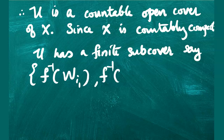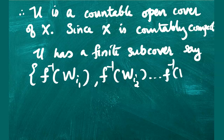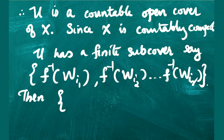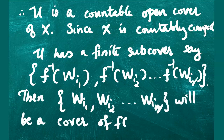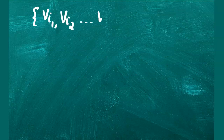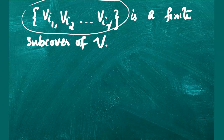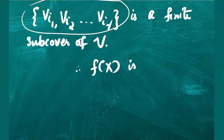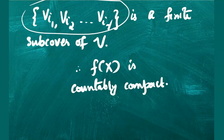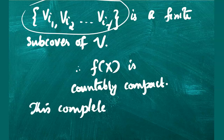Since X is countably compact, this cover has a finite sub-cover: f⁻¹(Wi1), f⁻¹(Wi2), ..., f⁻¹(Wir). Then the corresponding sub-collection {Wi1, Wi2, ..., Wir} is a cover of f(X), from which we obtain {Vi1, Vi2, ..., Vir}, a finite sub-cover of our original open cover V. Thus every countable open cover of f(X) has a finite sub-cover, proving f(X) is countably compact.